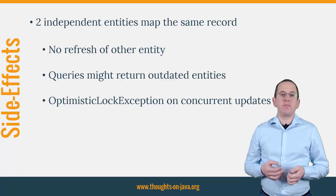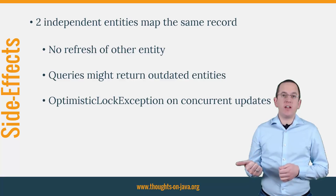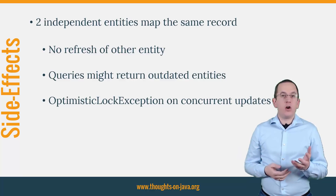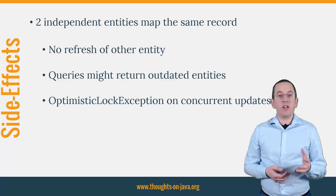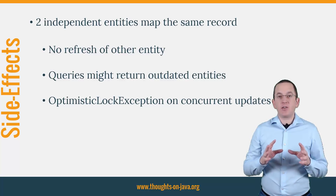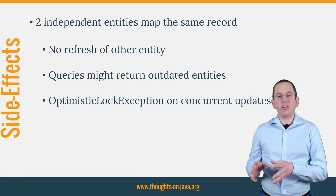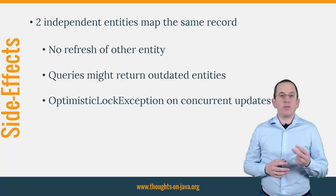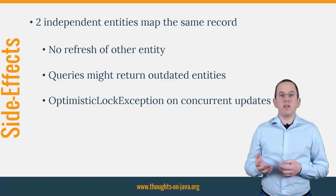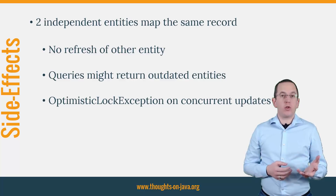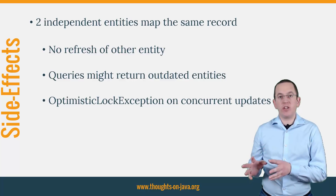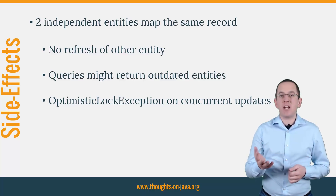That has a few implications. First of all, Hibernate doesn't refresh any of these entities if you update the other one, so you need to either take care of that yourself or make one of the entities immutable. The second issue is that Hibernate stores all managed entities in the first-level cache and delays all write operations until it flushes the persistence context. When you map 2 entities to the same database table, a call to EntityManager.find() to load an AuthorShort entity doesn't trigger a flush of the Author entities, so Hibernate doesn't write the pending changes to the database and the find method might return an outdated entity.